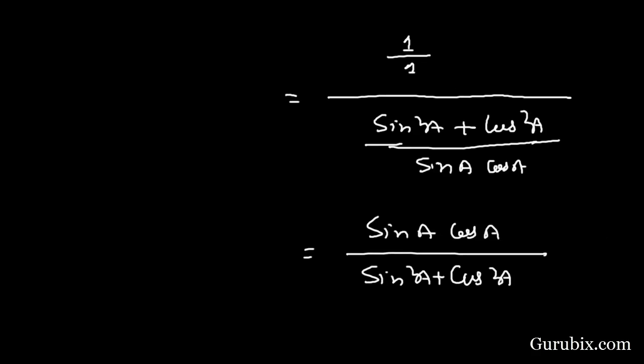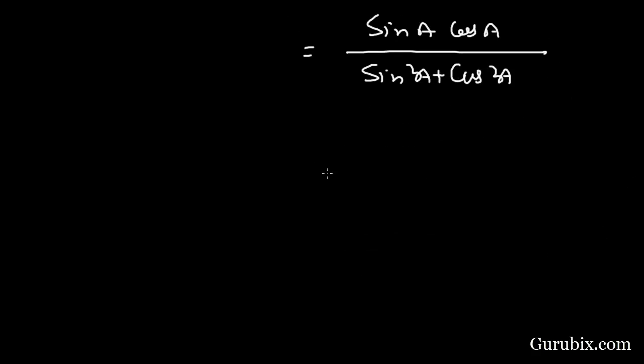We know that sin squared A plus cos squared A equals 1. Therefore, we have sin A cos A over 1, and this equals sin A cos A. This value equals the value we calculated from the left-hand side. So, left-hand side equals right-hand side. This is the solution of the question.